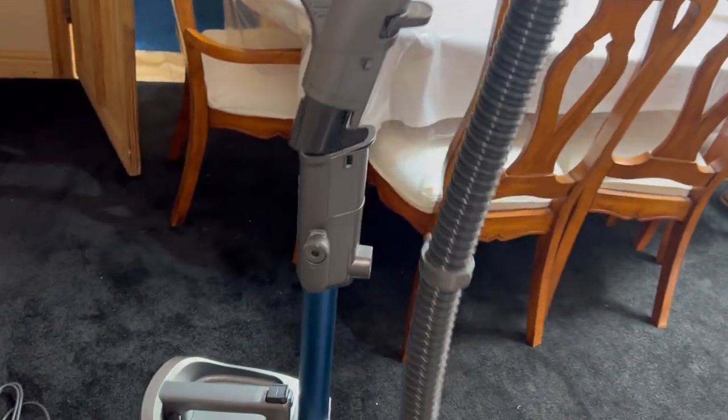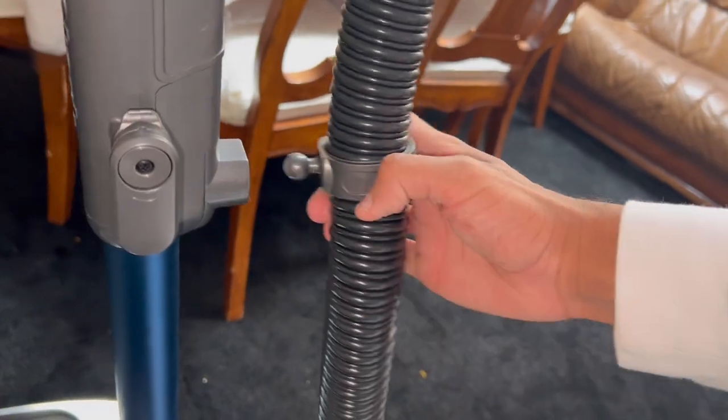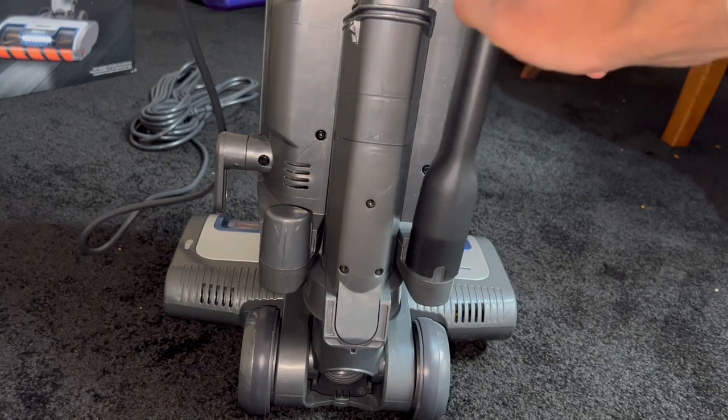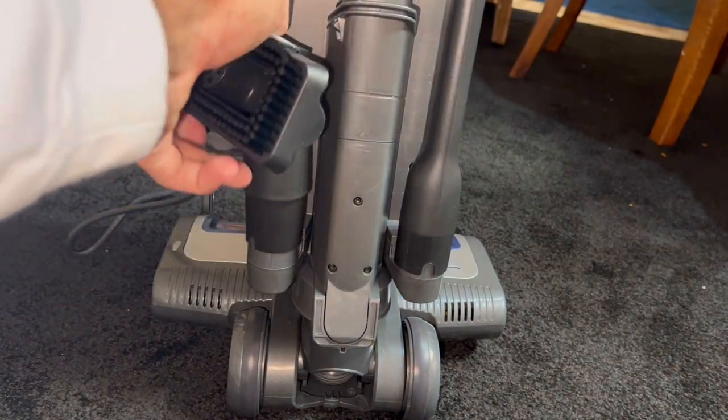The handle then goes into the wand. Clip your hose bracket onto the wand. Put your tools on the rear of the vacuum, so the crevice tool goes on the right-hand side, along with the stair tool on the other side.